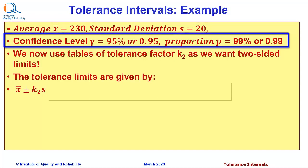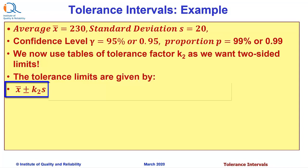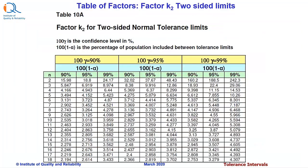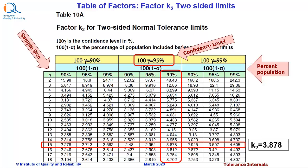Confidence level gamma is 95% or 0.95. Proportion P is equal to 99% or 0.99. We now use the table of tolerance factor K2, as we want two-sided tolerance limits. Remember that the tolerance limits are given by X̄ ± K2 × S. This slide shows the table of tolerance factor K2. In the problem, we have been given a confidence level of 95%, and we want 99% of the population included. The sample size is 15. From the table, factor K2 equals 3.878.